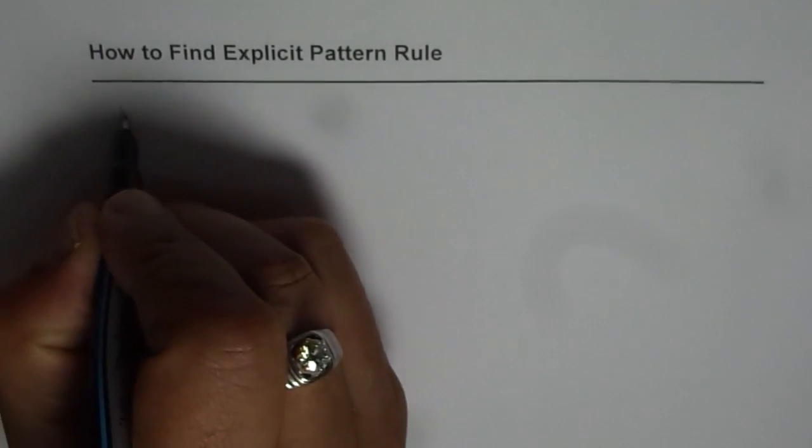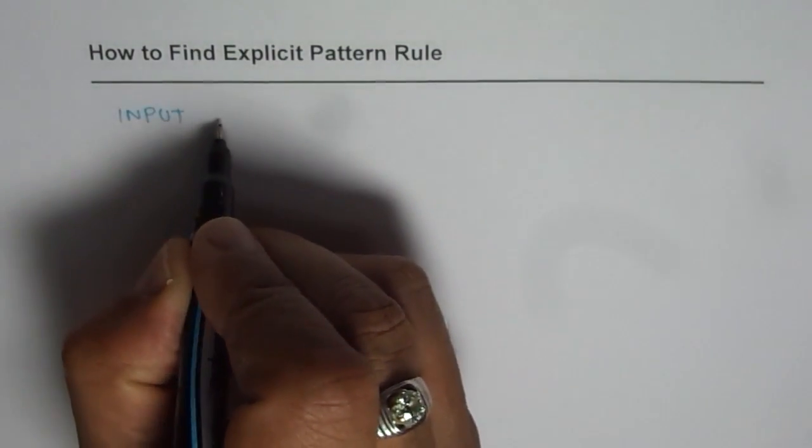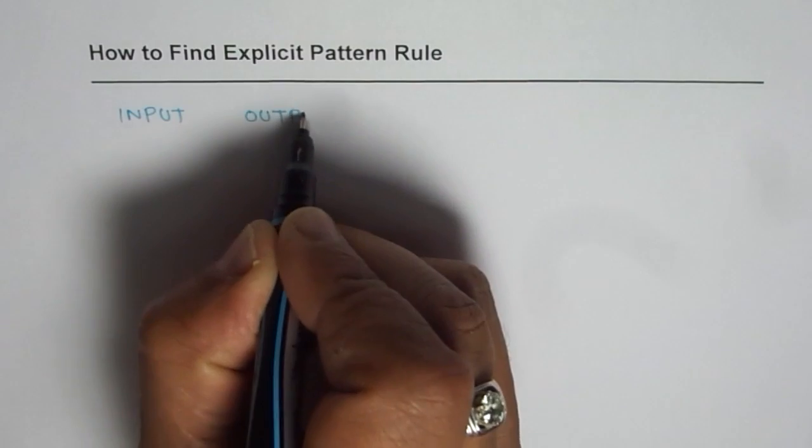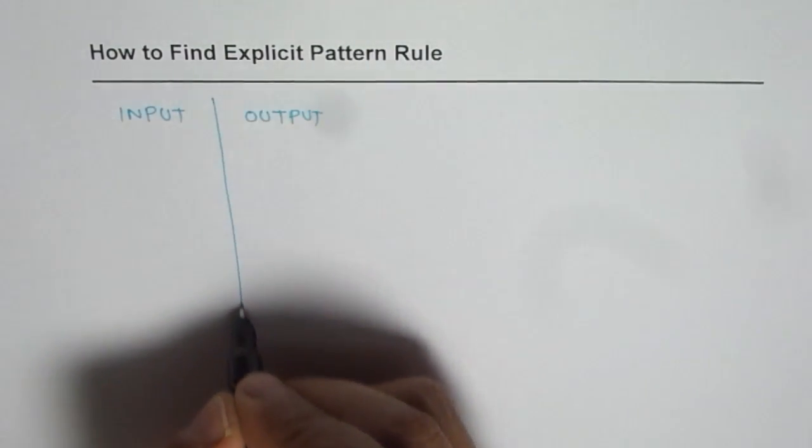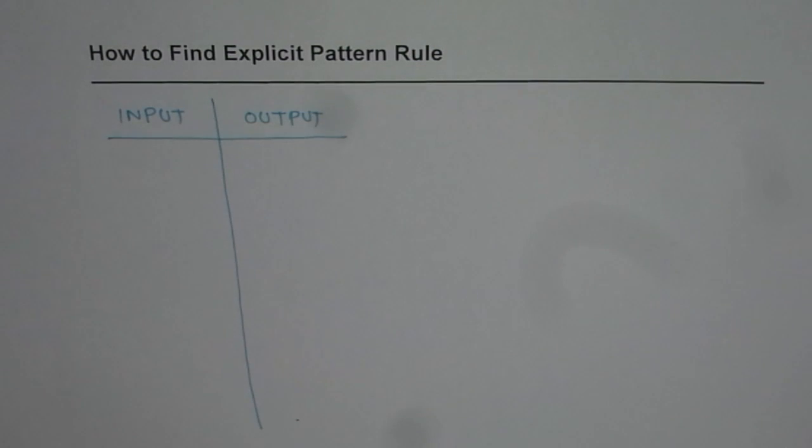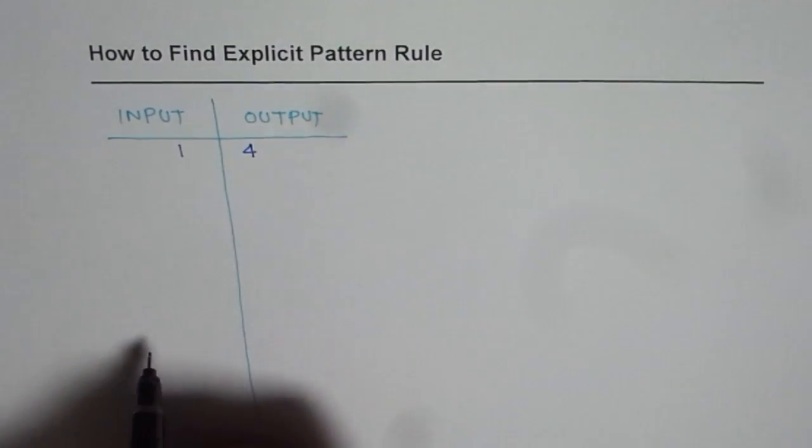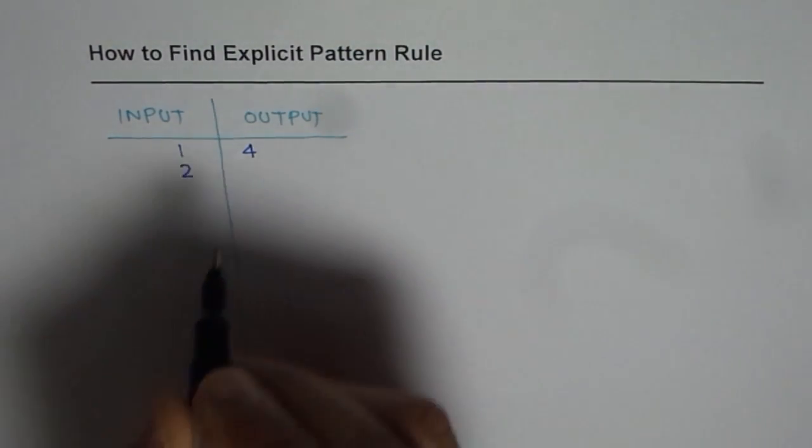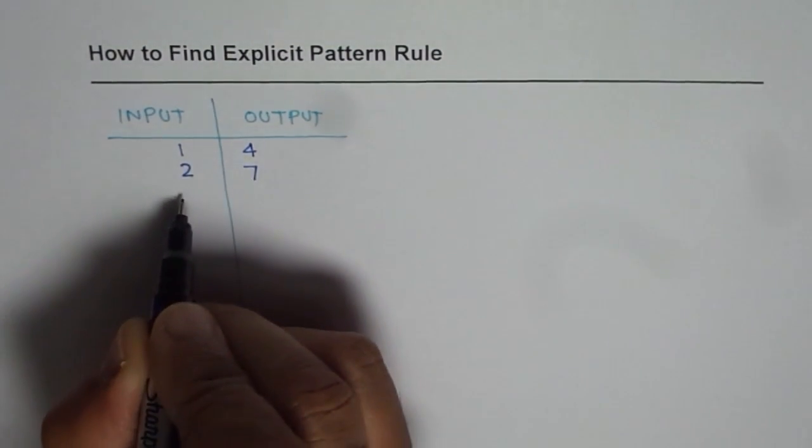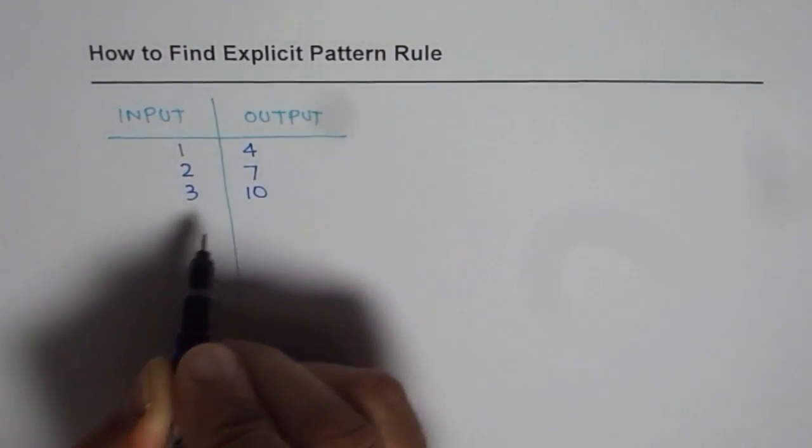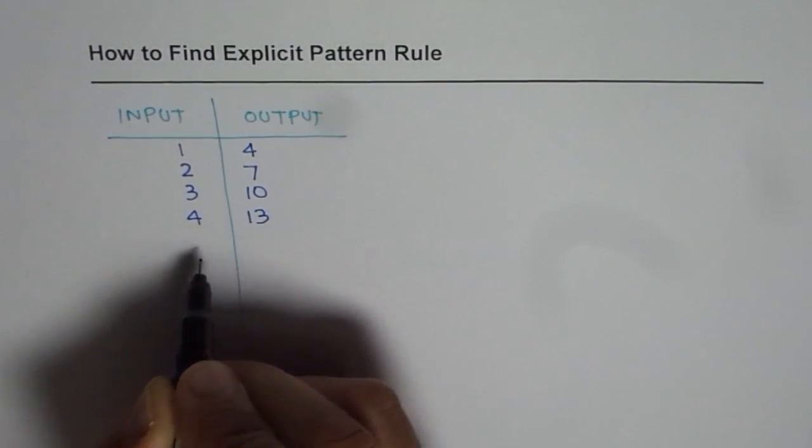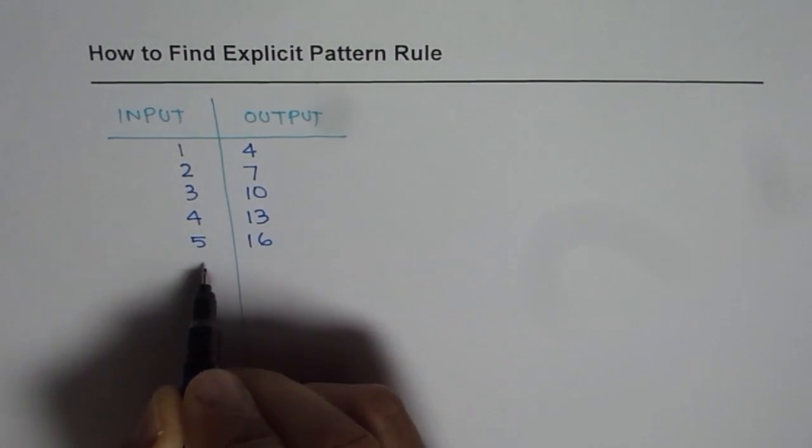Let's start with input output machine. We have some input and for that input we get some output and we will write it in the form of a T chart or T table. So let us say that this input output machine works like if I put an input of 1 I get output of 4. If I put input of 2 the output is 7, for 3 the output is 10, for 4 output is 13, for 5 output is 16 and so on.